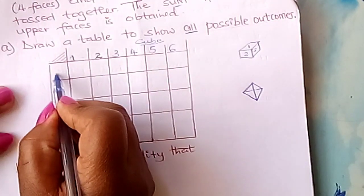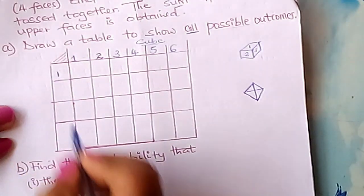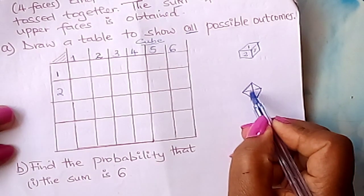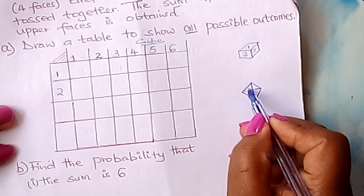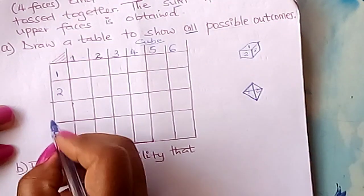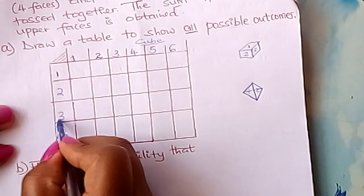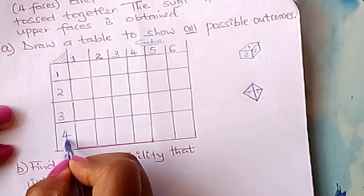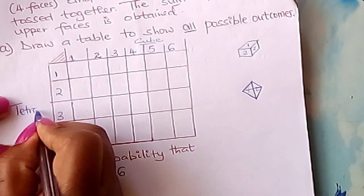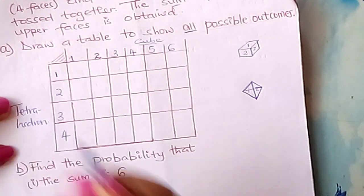You fix the numbers for the tetrahedron here: one, two, three, four — these are the numbers on its faces. So here we have fixed the sides of our tetrahedron along the side of the table.